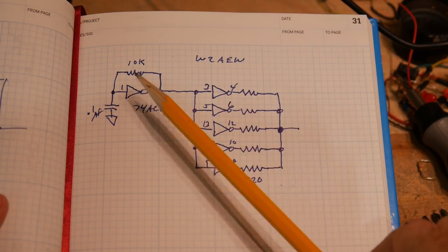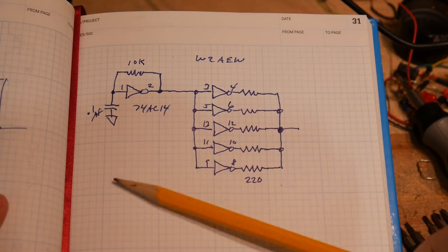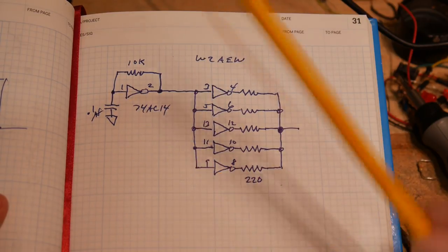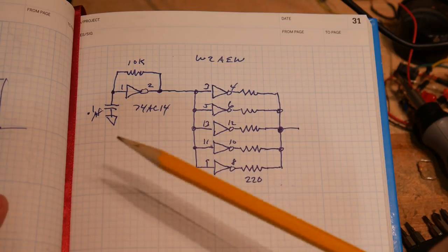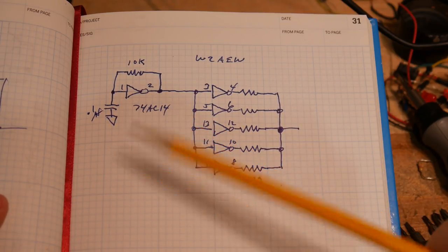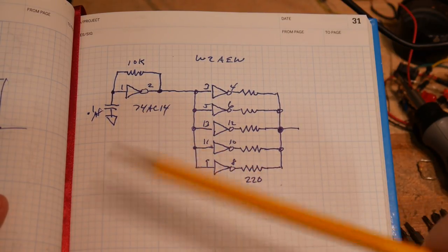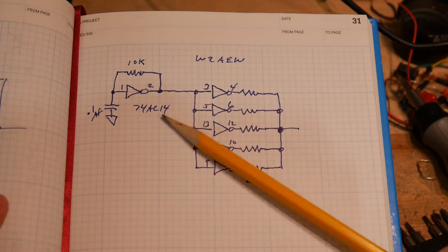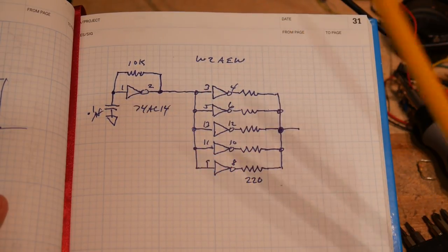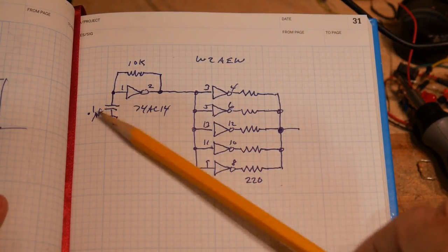And the Schmidt trigger inverter is nice because it has two distinct places where it will change from a low to high state or a high to low state. A lot like a 555 timer has the one-third, two-thirds voltage swings. The 74AC14 part, the Schmidt trigger part, is a lot like that. So it's easy to make an oscillator out of it.